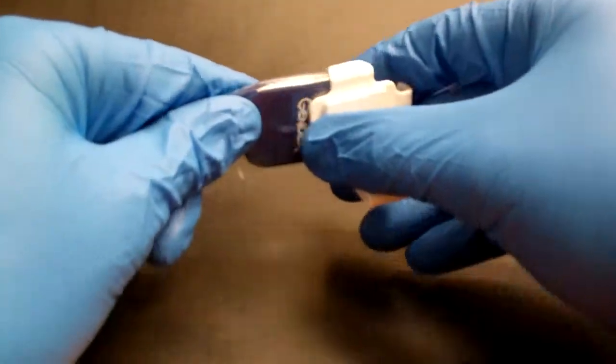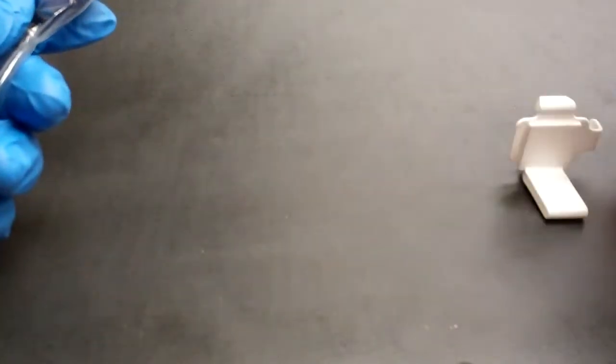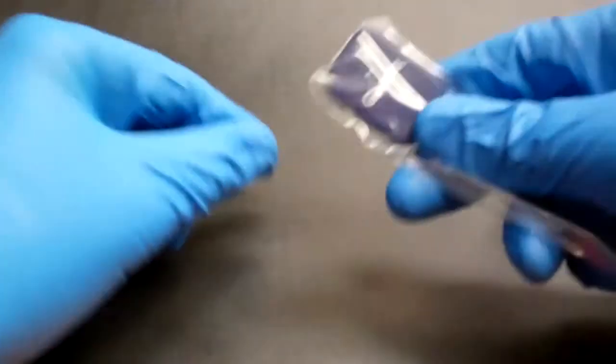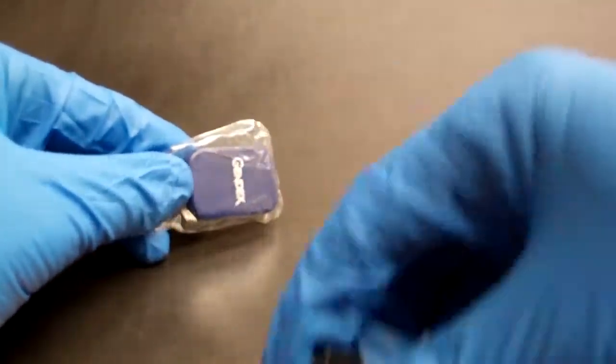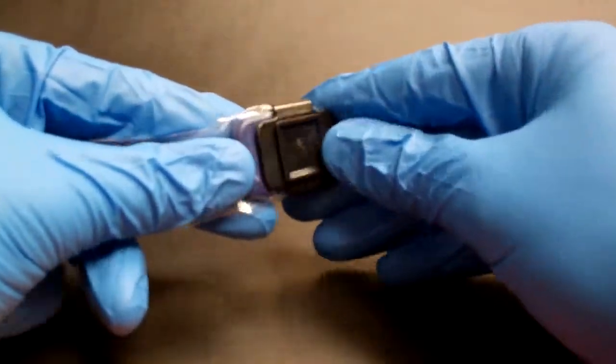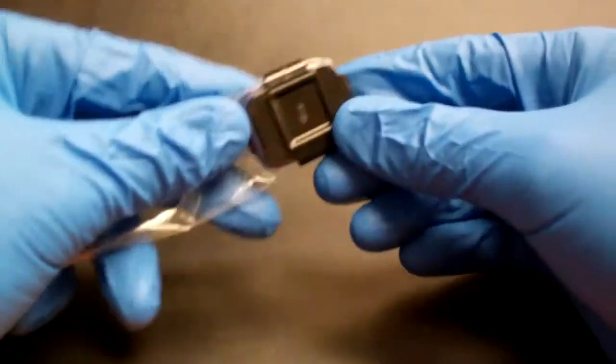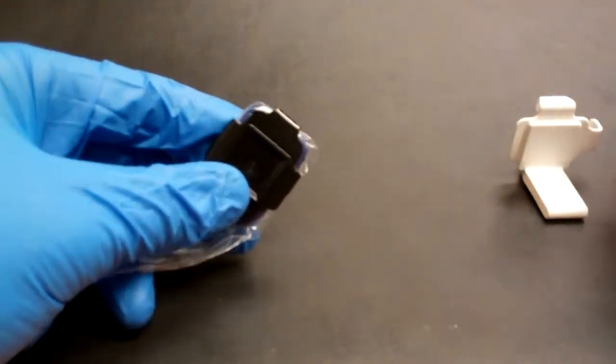And when you're done, you can just slide the piece off and go on. Now this is the Gendex GXS 770 size 1. So we would just use a different base for this size sensor. The black base is for the size 1 sensors.